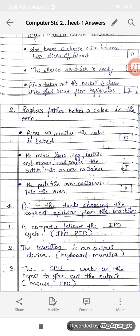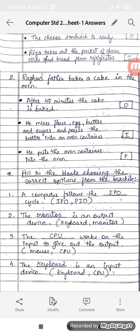So write down O, I, P. Fill in the blanks choosing the correct options from the brackets. First, a computer follows the dash cycle, that is IPO cycle: input, process, and output.